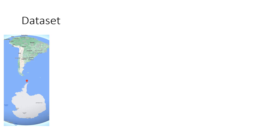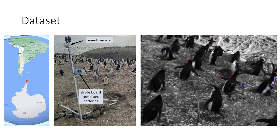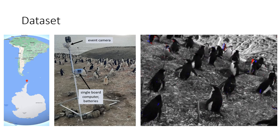We captured data in January 2022 on Deception Island, Antarctica. Our recording system consisted of a Davis 346 event camera attached to a single-board computer and a battery. The obtained data consists of events at microsecond accuracy and one grayscale frame every eight seconds.